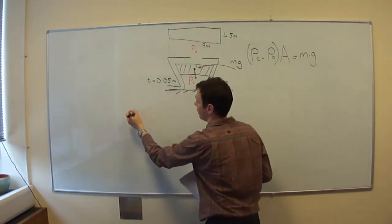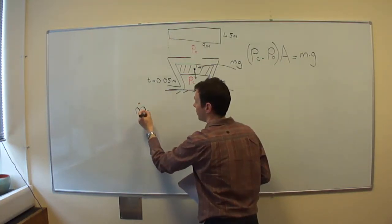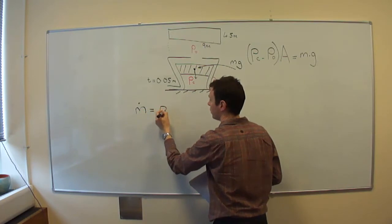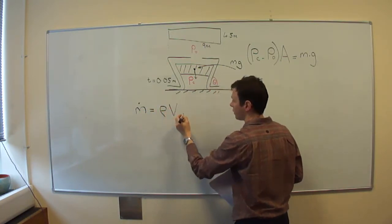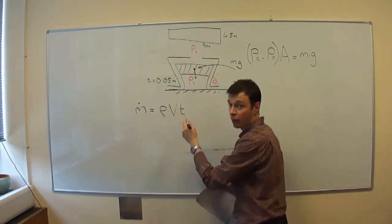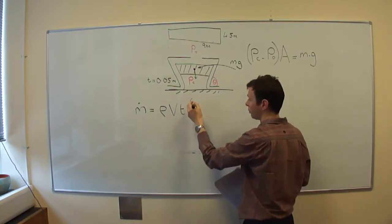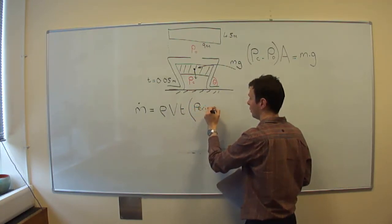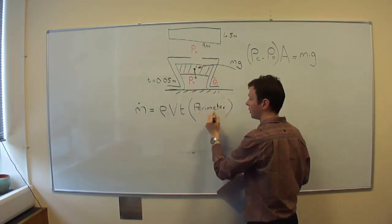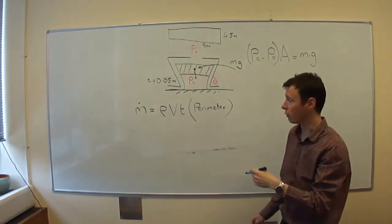So we can just write mass flow rate equals density times velocity times the jet thickness, or the width of the jet, and then multiplied to the distance around the outside of the hovercraft.